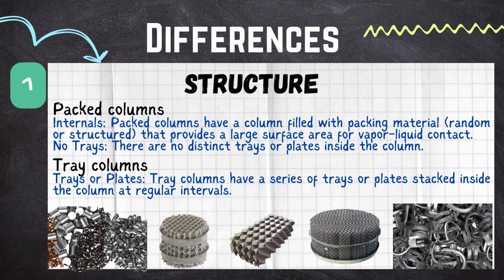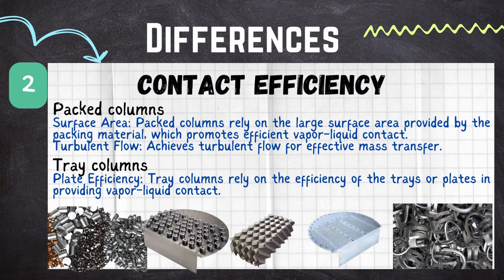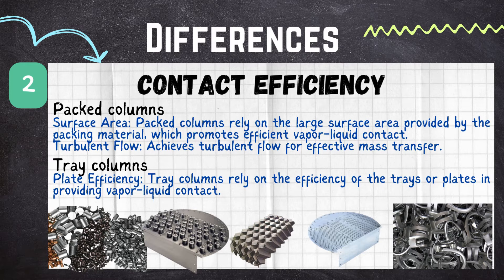The second difference is contact efficiency. The packed column relies on the large surface area provided by the packing material, which promotes efficient vapor-liquid contact. This large surface area and high vapor-liquid contact is achieved because of turbulent flow, which is very effective for mass transfer. In the case of tray columns, contact efficiency relies on the efficiency of the plates or trays which are provided for vapor-liquid contact.